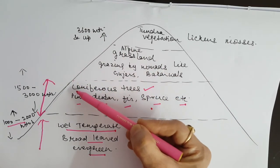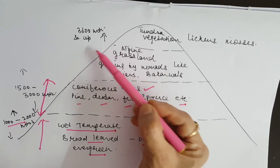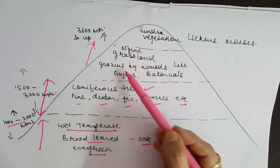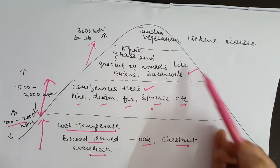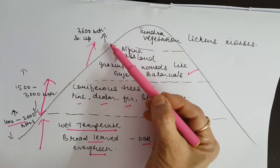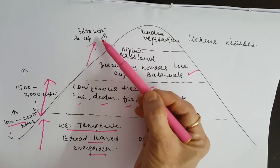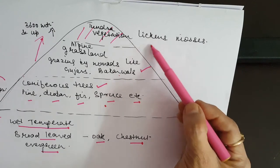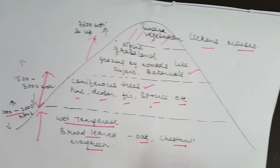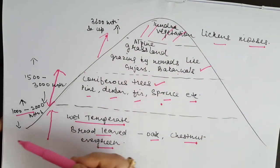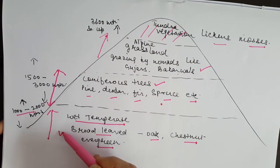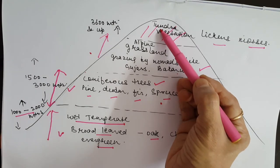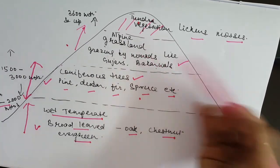This temperate vegetation in India is found in the southern slopes of the Himalayas, some parts of northeastern states, and high altitude areas of southern India. Beyond 3000 meters, vegetation is predominated by alpine and tundra vegetation. Initially the coniferous trees give way to alpine grassland, which is lush green grass up to approximately 3600 meters, used by nomads like Gujjars and Bakkarwals for grazing. Beyond 3600 meters the snow line appears, and the tundra vegetation is dominated by lichens and mosses.